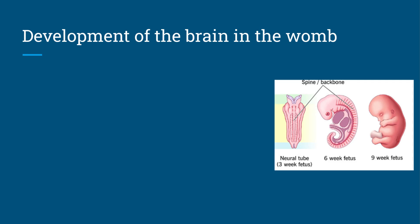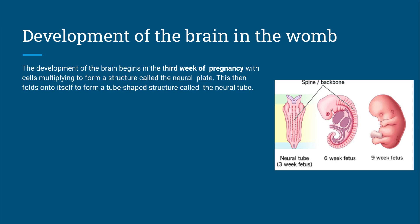So the first thing we're going to look at is how the brain develops in the womb. You can see this little image over here on the right which gives you an idea of how your spine and brain changes. In the third week of pregnancy, brain development starts. Cells start to multiply and form something called a neural plate, and that then folds in on itself and we get something called the neural tube. That's what you can see in that image on the left side there.